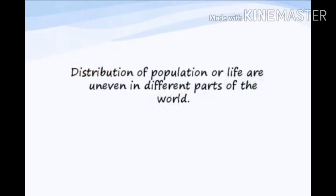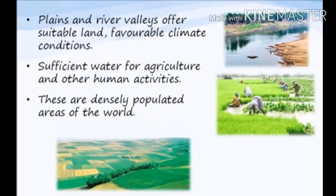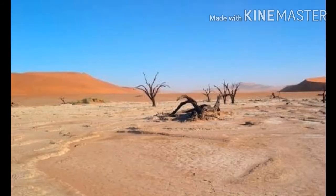Now we will talk about the utilization of different land forms, or distribution of life. The distribution of life across land forms is very uneven. Plain lands support a dense population, while deserts are not very supportive for population due to dry and extreme climatic conditions. Nomadic people have to survive in such areas.